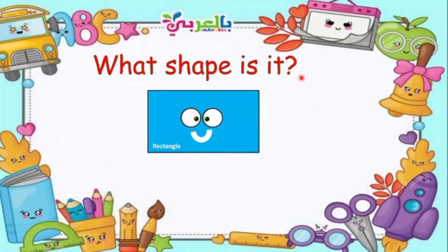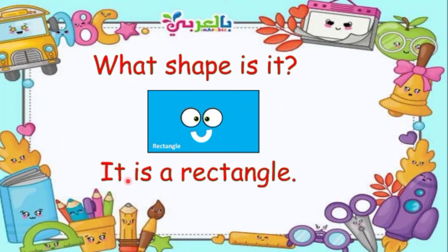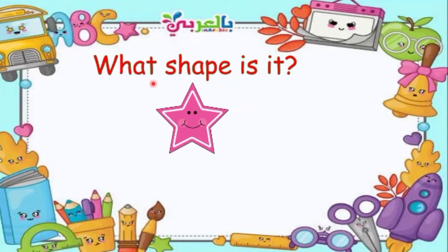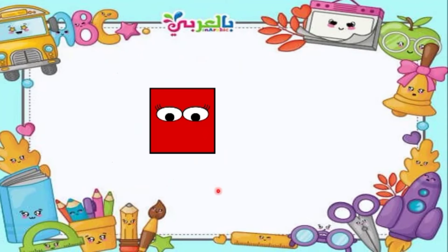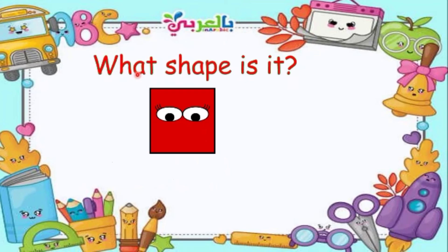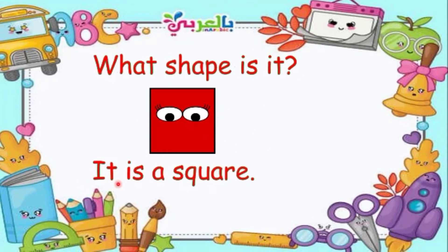Now let's try answering questions. What shape is it? It is a rectangle. Again, it is a rectangle. What shape is it? Look at the picture. It is a star. Again, it is a star.